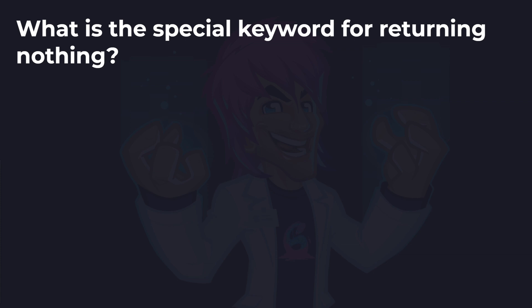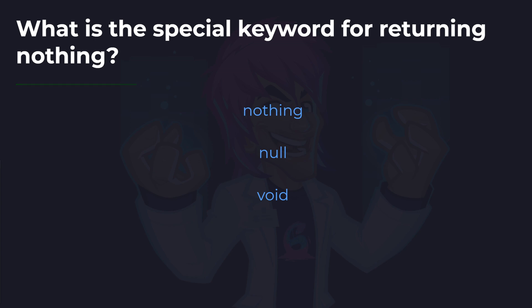Next up: what is the special keyword for returning nothing? Is it nothing, null, or void? This is the keyword used when declaring a method and specifying a return type. And the answer is void. Null we will cover in a future lesson — it's a special type meaning nothing — but when we are returning nothing, the keyword is void.